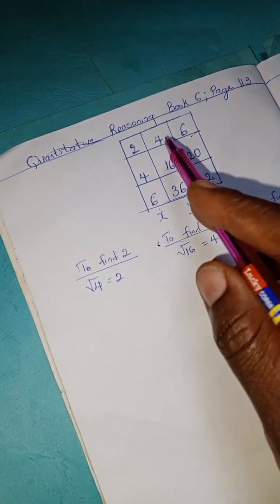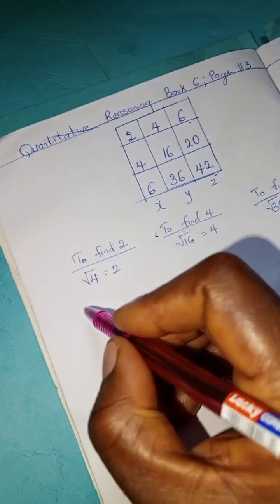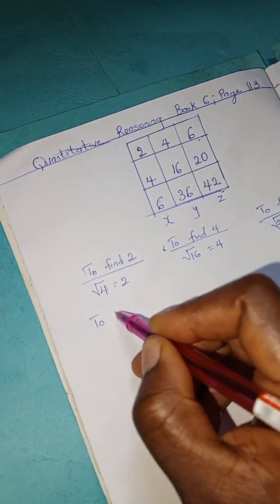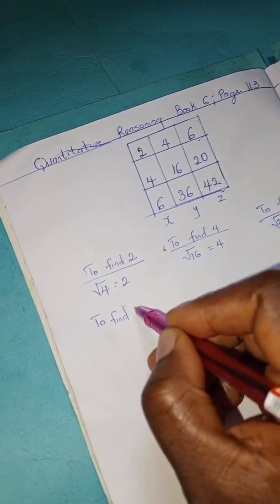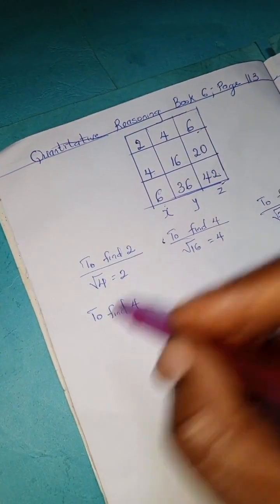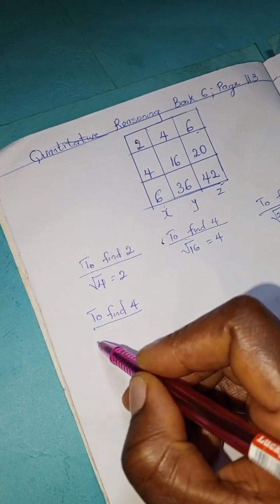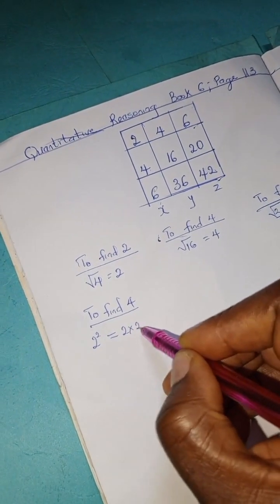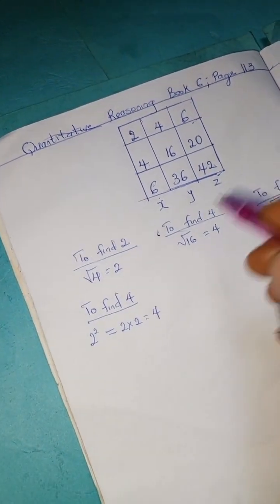Okay, so we're going to move over to the next column. To find 4, we're going to have 2 squared, which is 2 times 2, equals 4.